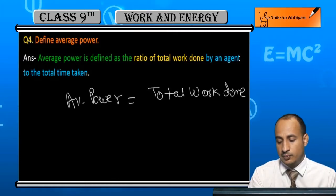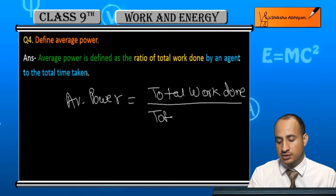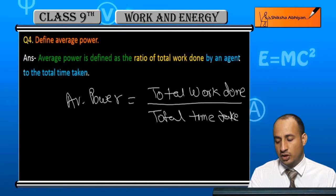Total work done upon total time, total time taken. This is called average power.